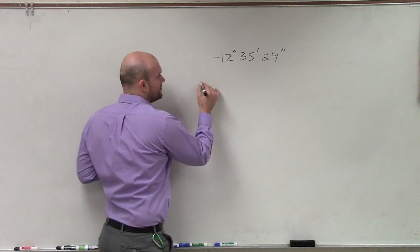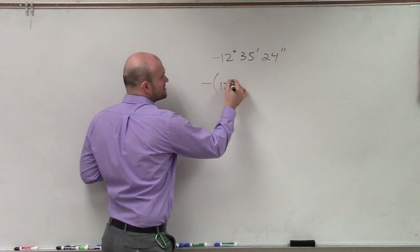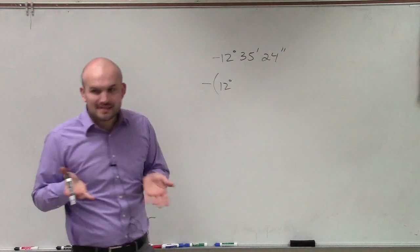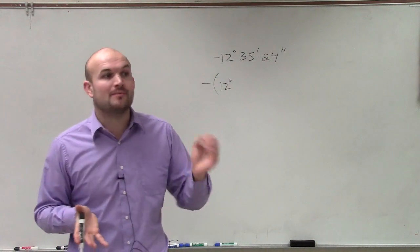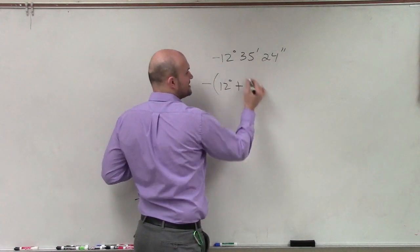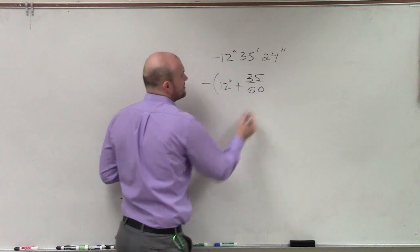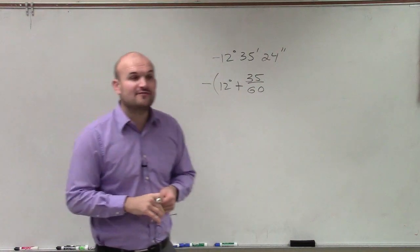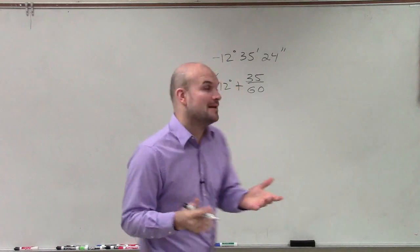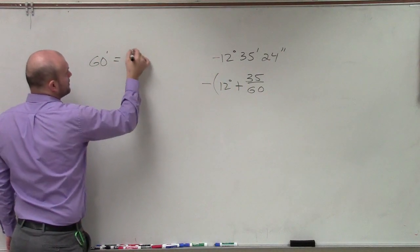So what we're going to do is keep the subtraction sign on the outside, but we have 12 degrees plus 35 minutes. How many minutes are there in a degree? Remember, there's 60 minutes in a degree. So therefore, this in a decimal form or fractional form would be 35 minutes out of 60 minutes. Because 60 minutes is equal to 1 degree.